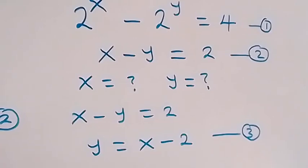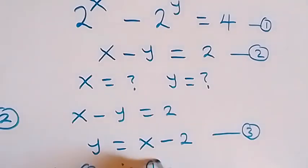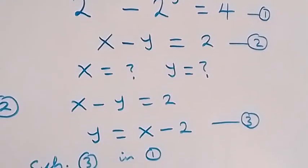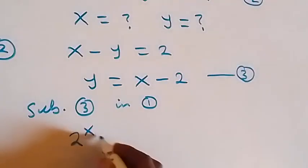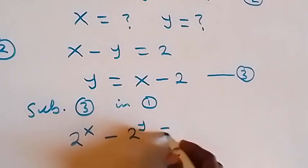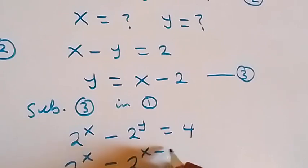So from here, let's substitute equation 3 into equation 1. Then what we have in equation 1, which is 2 raised to power x minus 2 raised to power y equals to 4, now becomes 2 raised to power x minus 2 raised to power (x minus 2), equals to 4.